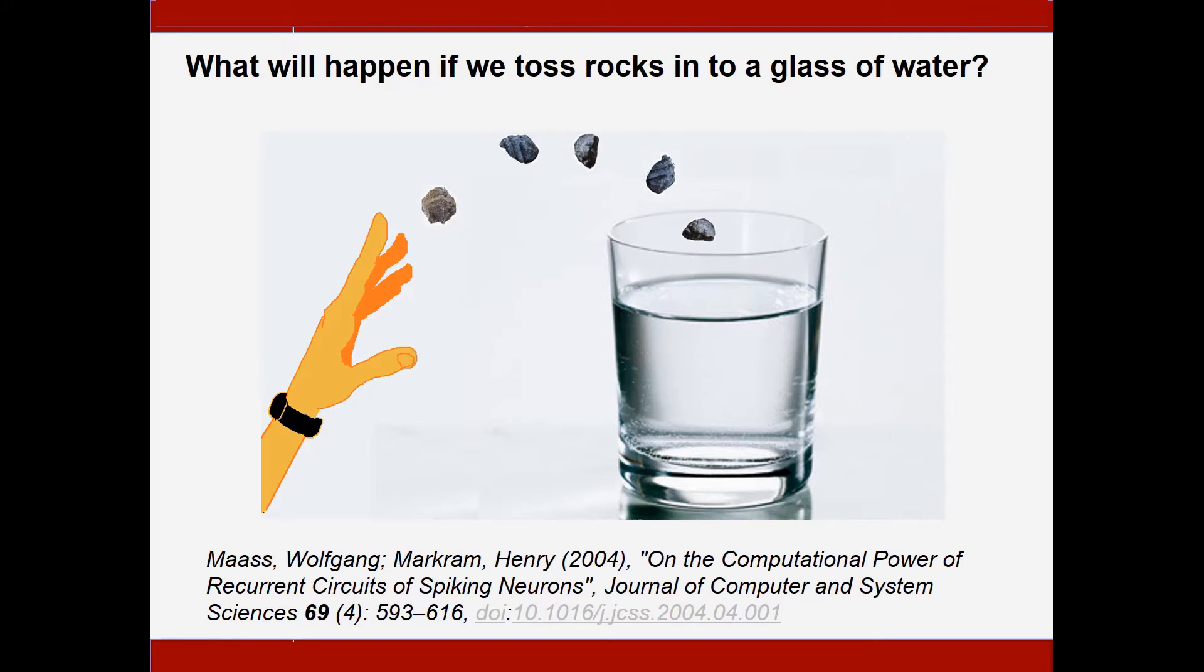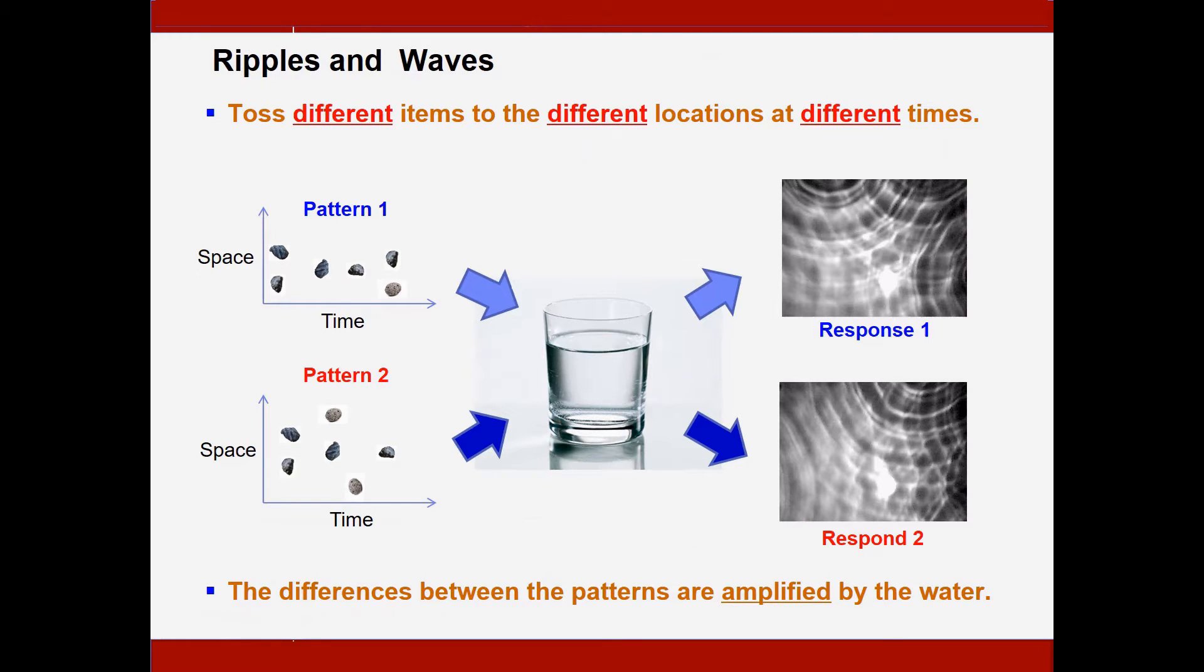Before we talk about the liquid-state machine, let us first make a thought experiment. That is, what will happen if we toss rocks, a lot of rocks, or small stones into a glass of water? Of course, we can get a lot of ripples and waves. However, we can toss different atoms to the different locations of the glass of water at different times, which makes many different patterns. And this glass of water will generate unique response for each particular input pattern. And considering the nature of the liquid, some researchers believe that the difference between these patterns can be amplified by the water.